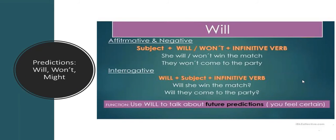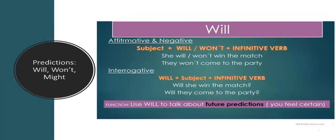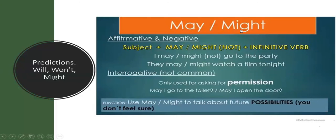Now we're going to see might. Remember, will and won't express certainty — 100% sure that something will or will not happen. May and might are very similar to each other. The function of may and might is to talk about future possibilities — you don't feel sure about them, but it is a possibility that they can happen. We have the affirmative and negative forms.